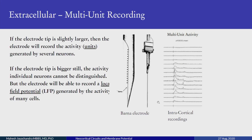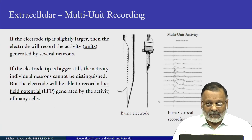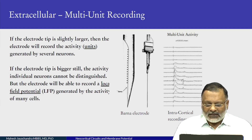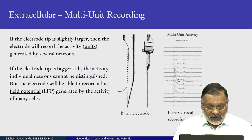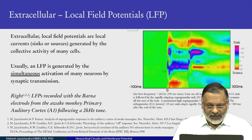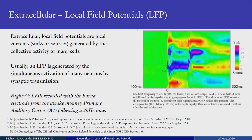If the electrode tip is slightly larger — maybe about 5 or 10 microns — then you start getting multiple unit activity, a population of units you cannot distinguish individually. These are recordings from the auditory cortex of a monkey, using a linear array of 15 to 16 microelectrodes separated by 100 microns, called the Barna electrode, which records multi-unit activity. If the electrode is bigger still and you change the filter settings, then you record local field potentials — field potentials recorded when an ensemble or neuronal circuit gets activated. Here you see the Barna electrode recording a response to a 100 millisecond tone, showing activity across different layers of the cortex.